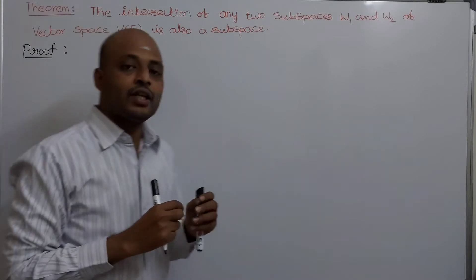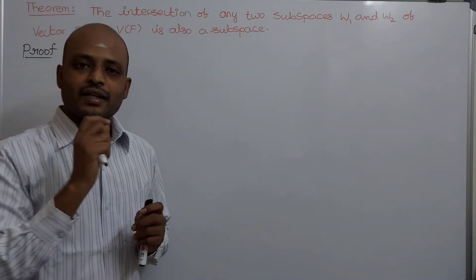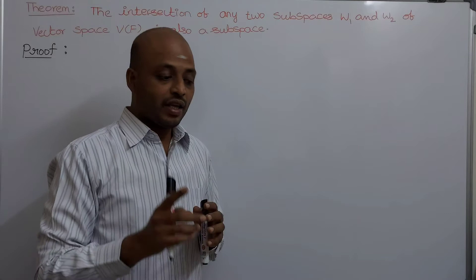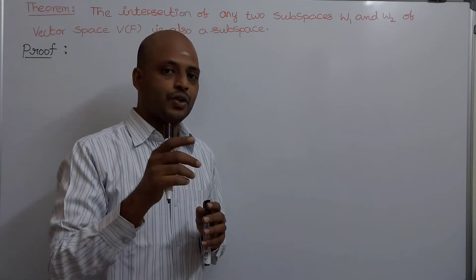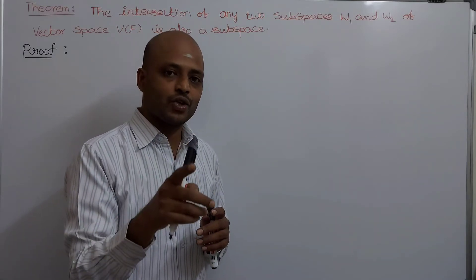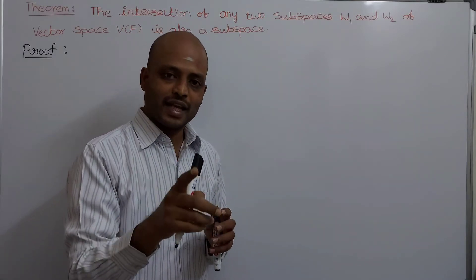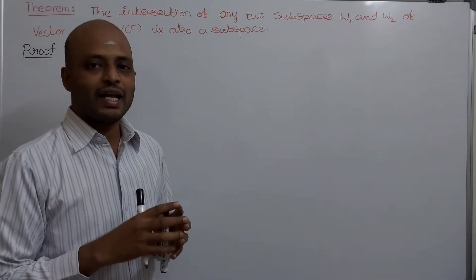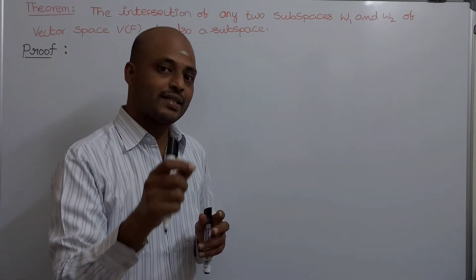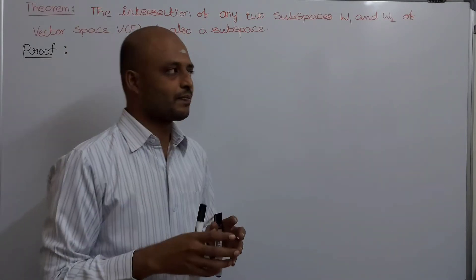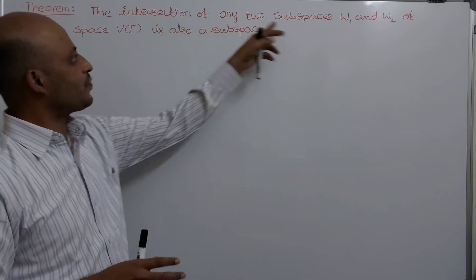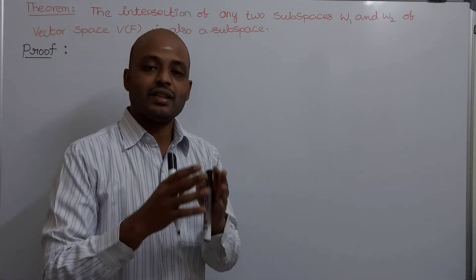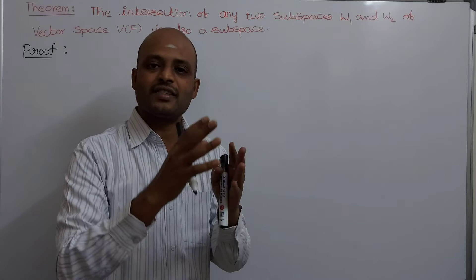In group theory we learn that the intersection of two subgroups is a subgroup. Even in cyclic groups, the intersection of two cyclic groups is a cyclic group. In ring theory we learn that the intersection of two ideals is an ideal. Here the intersection of two subspaces is again a subspace. The concept is the same.